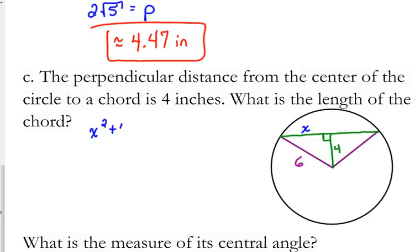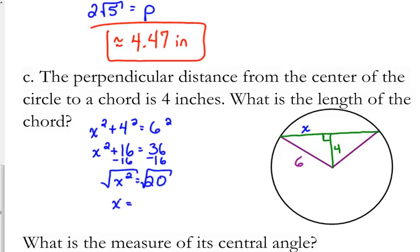Okay. X squared plus 4 squared equals 6 squared. So X squared plus 16 equals 36. Subtract 16 from both sides. X squared equals 20. So take the square root. That should look familiar. That's what we got yesterday. Let's simplify that square root. That's 2 square root 5. That's 20 is 4 times 5. Square root of 4 is 2. And that was approximately 4.47.